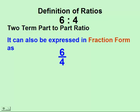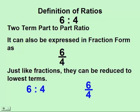Ratios can also be expressed in fraction form, as a numerator over a denominator. And just like fractions, they can be reduced to lowest terms. Dividing the top and bottom by the same number reduces a fraction, in this case 3 over 2.